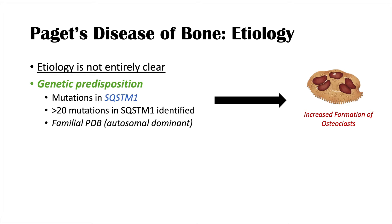The mutation in this gene is responsible for what we call familial Paget's disease of bone, which is an autosomal dominant condition — meaning one of the patient's parents must have had Paget's disease of bone as well. This is in contrast to spontaneous or sporadic Paget's disease of bone, where an individual has no family history and has simply had a spontaneous mutation. These two types present similarly but have a different suspected etiology.